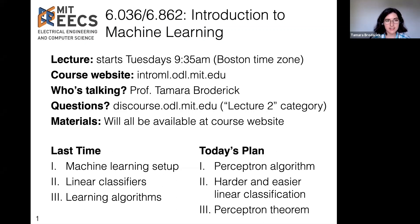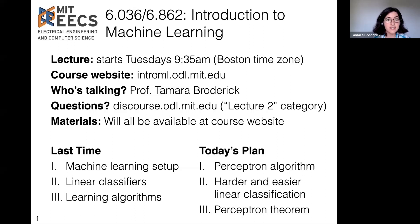Last time we talked about why we're studying machine learning, some basic setup questions, the notation for setup, what data we're talking about, and we started on an example of machine learning where we're interested in linear classifiers and learning algorithms to find a good linear classifier. Today we're going to continue by talking about problems with the linear classifier — we found a learning algorithm last time, so what's problematic about it — and we'll see that it's not perfect and that we can do better with something like a perceptron algorithm. We'll introduce this alternative learning algorithm, talk about different types of linear classification, how a particular dataset might represent a harder or easier problem, and that will help us talk about how well the perceptron performs, in fact, in a mathematical theorem.